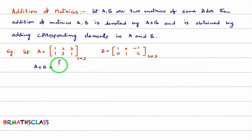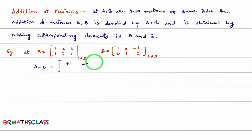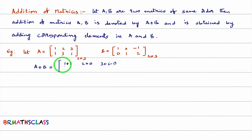And how will we get A plus B? By adding corresponding elements in A and B. Corresponding elements means the first element in A and first element in B — that means 1 plus 1. First row second element in A and first row second element in B — that is 2 plus 0. First row third element in matrix A and first row third element in matrix B — that is 3 plus minus 1. Then second row: 1 plus 0, 3 plus 1, and 1 plus 2.